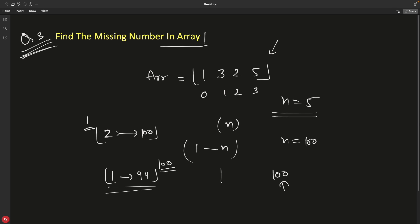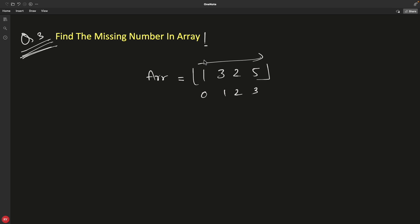These numbers are randomly placed. What do you think, how should we solve this? One way is you just sort these elements and then iterate one by one and see if you can find the missing element. If you sort this it will be 2, 3, 5.